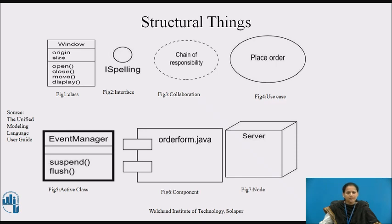Next, an active class is a class whose objects own one or more processes or threads and therefore can initiate control activity. It is just like a class except that its objects represent elements whose behavior is concurrent with other elements. Graphically, an active class is rendered just like a class but with heavy lines, usually including its name, attributes and operations, as shown in figure five.